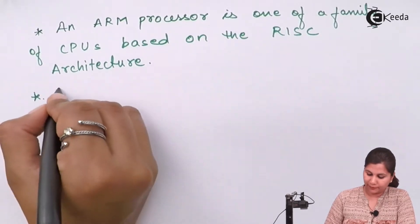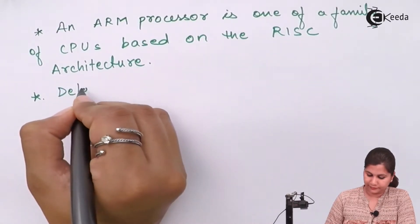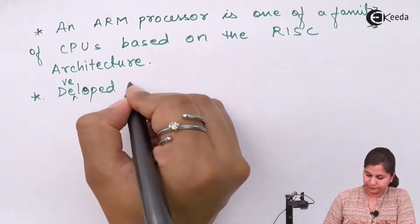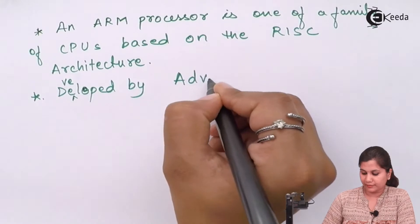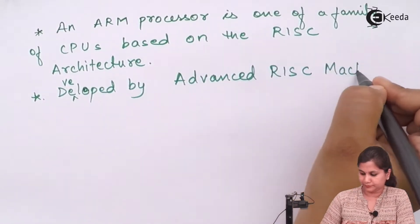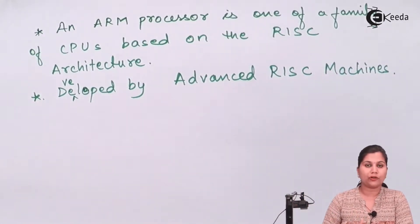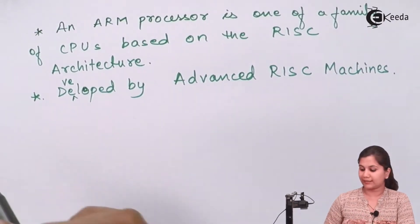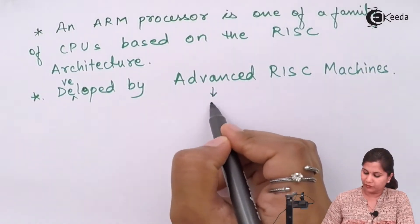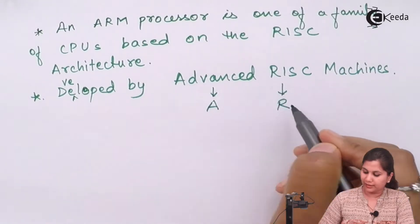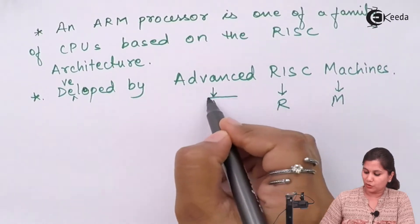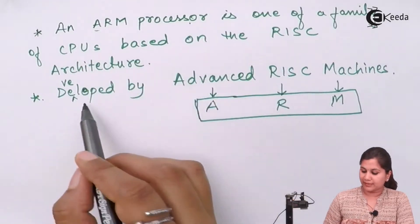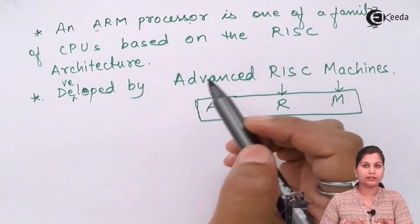This ARM processor is developed by Advanced RISC Machine. This corporation was first called Acorn RISC Machines, and after that it was renamed as Advanced RISC Machine. So A is for Advanced, R is for RISC, and M is for Machine — that is why it is called the ARM processor, and it is based on the RISC architecture.